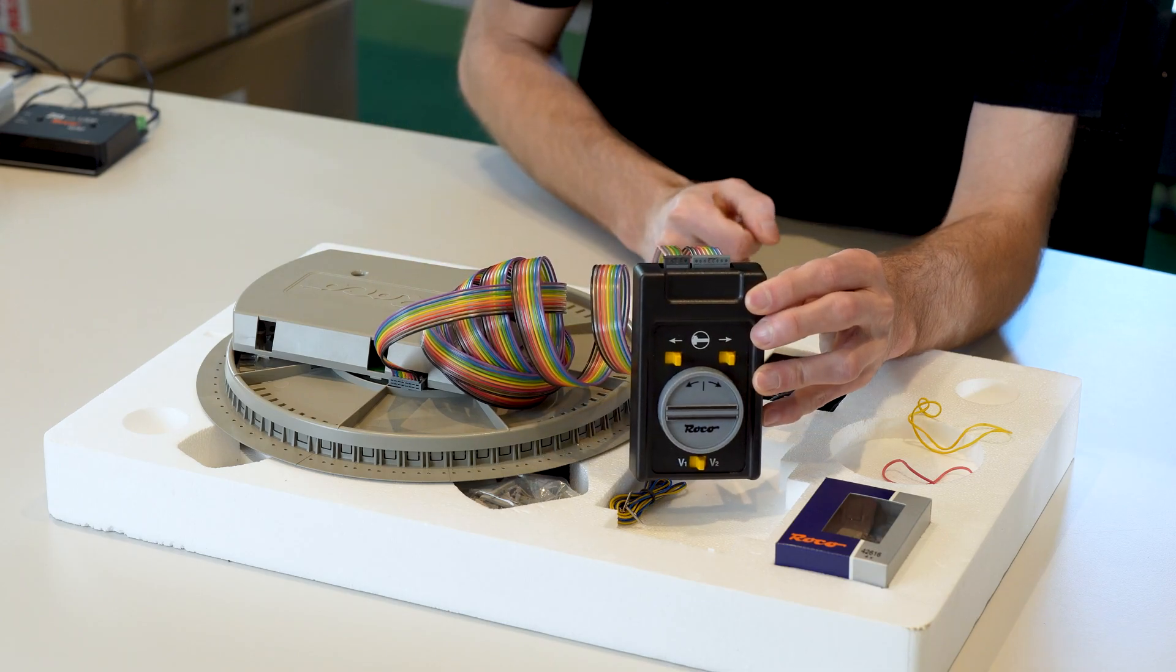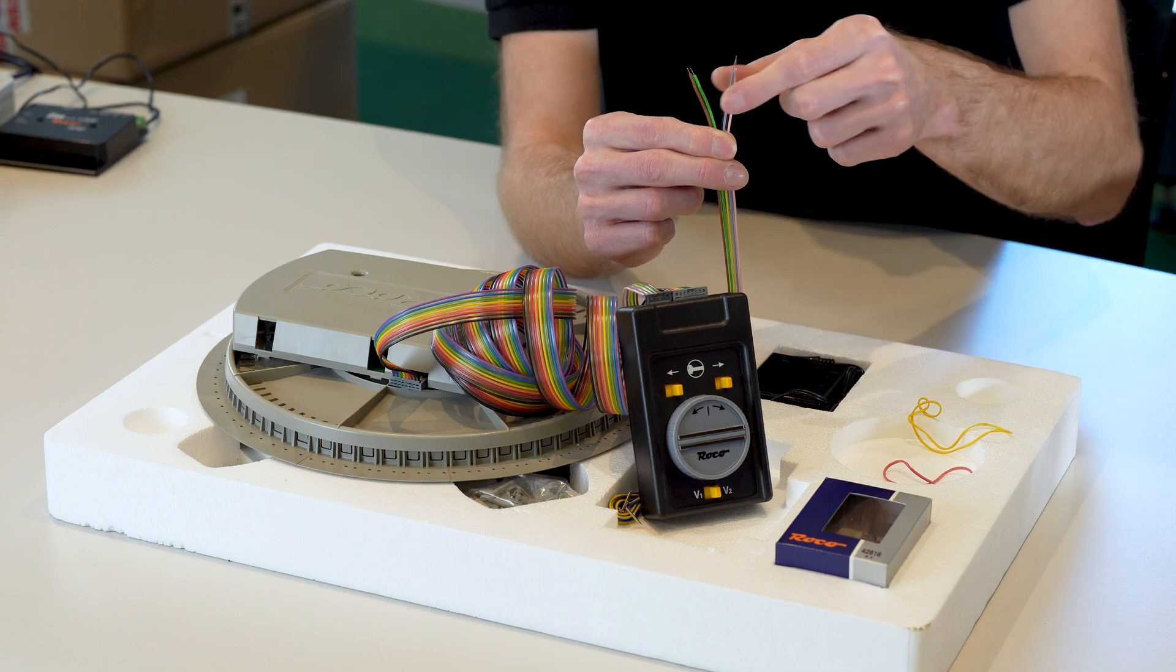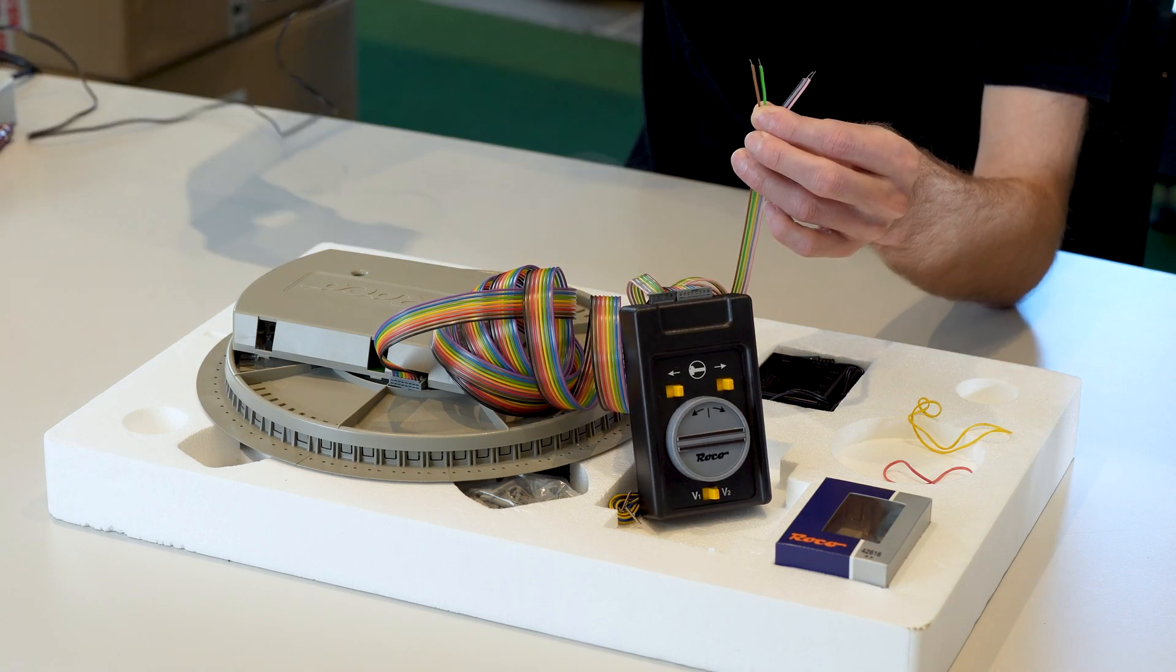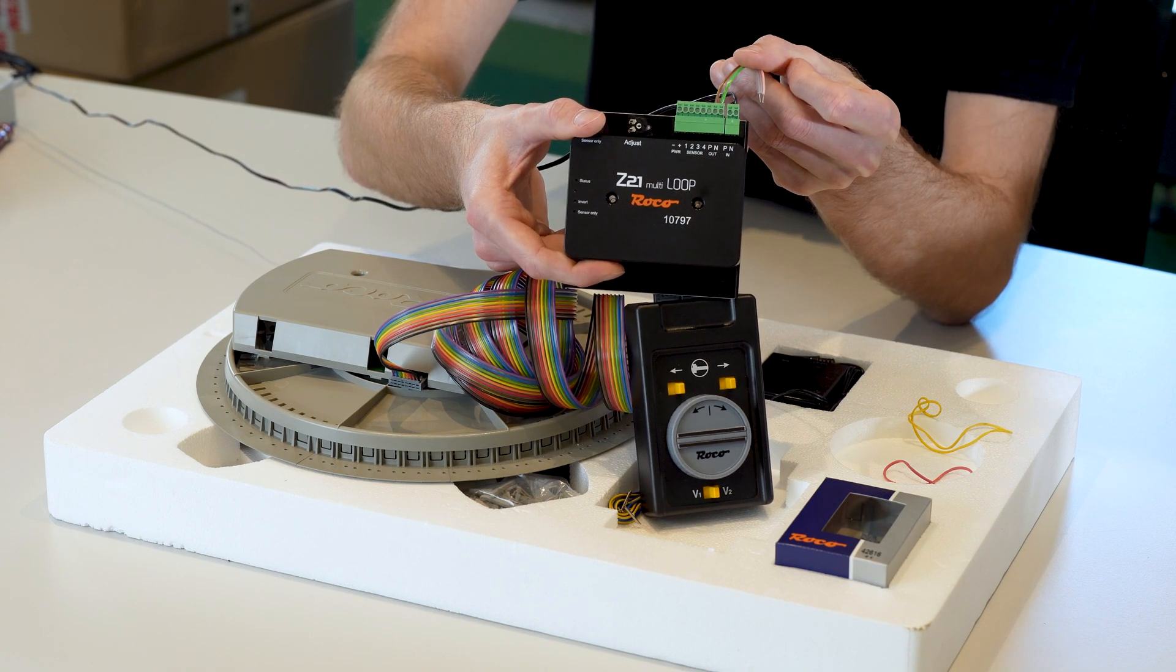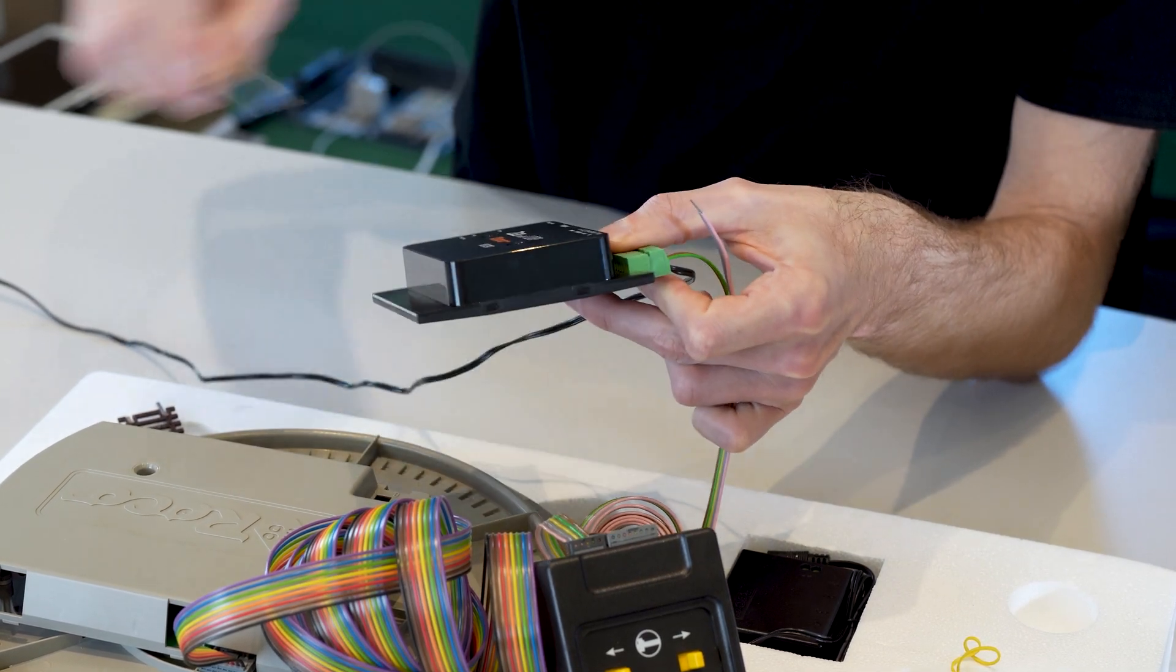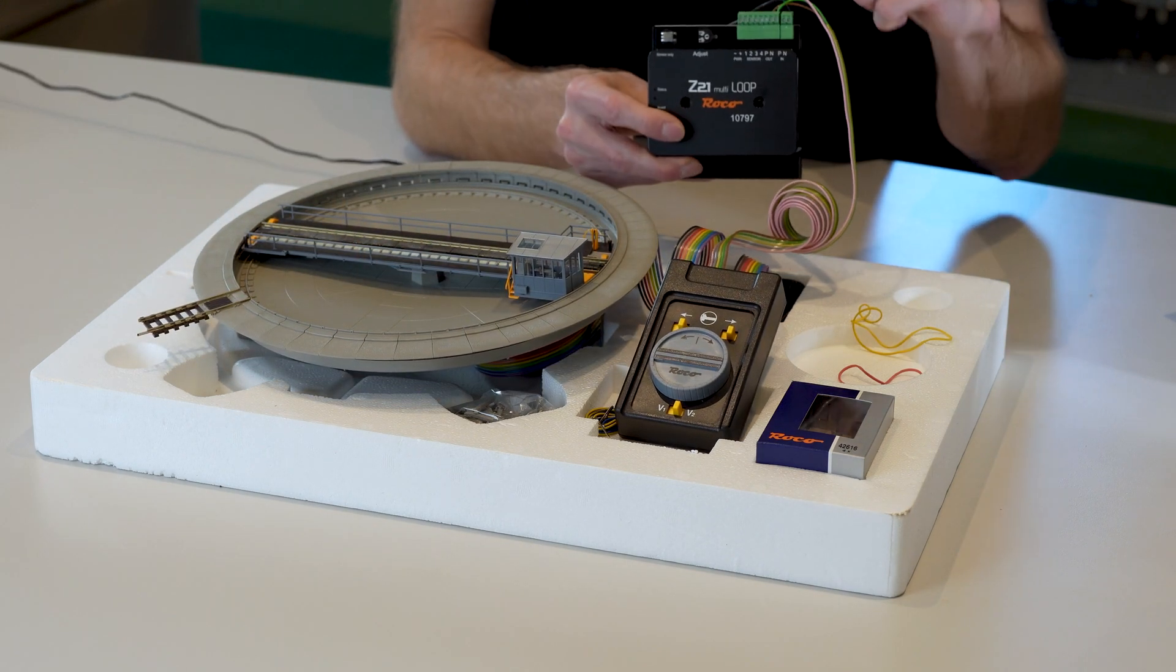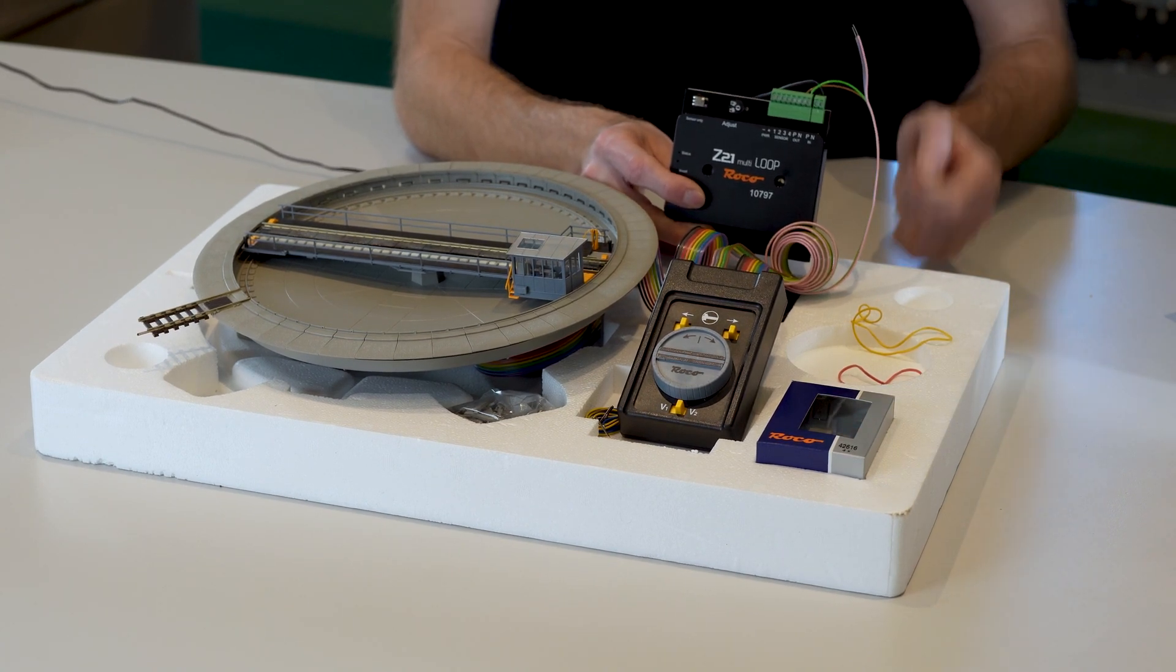The two cables are connected to the accessory transformer for the turntable motor and the green and brown cables are connected to the reverse loop module at the two outputs. When the turntable is installed, the reverse loop module controls the polarity reversal for the platform voltage. The accessory transformer controls the control unit for the turntable, so it can then control the turntable motor to rotate the platform.